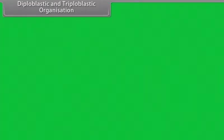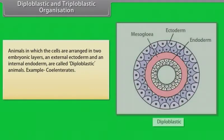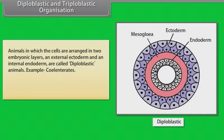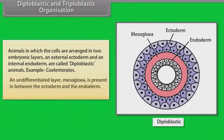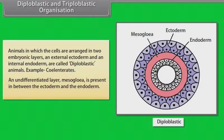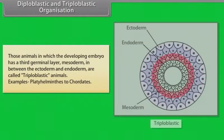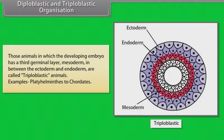Animals in which the cells are arranged in two embryonic layers — an external ectoderm and an internal endoderm — are called diploblastic animals. Example: Coelenterates. An undifferentiated layer, mesoglea, is present between the ectoderm and endoderm. Animals in which the developing embryo has a third germinal layer, mesoderm, in between the ectoderm and endoderm are called triploblastic animals. Example: Platyhelminthes to chordates.